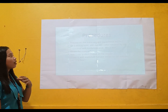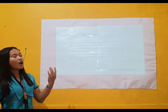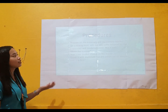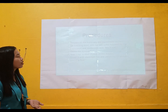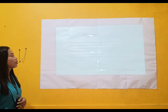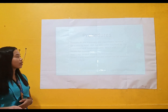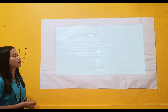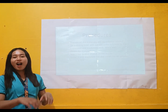Here are the procedures in making veggie flan: prepare all materials and ingredients needed; in a mixing bowl, add the egg yolk followed by evaporated and condensed milk and mix well; strain the mixture; add one teaspoon of grated cheese on the molder; and lastly, cover it with aluminum foil and steam for 30 minutes until firm.